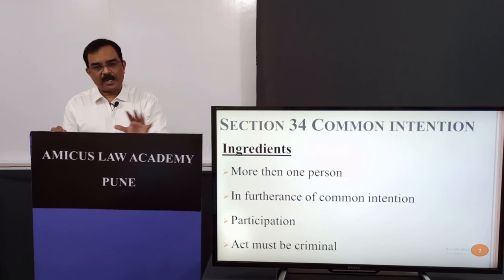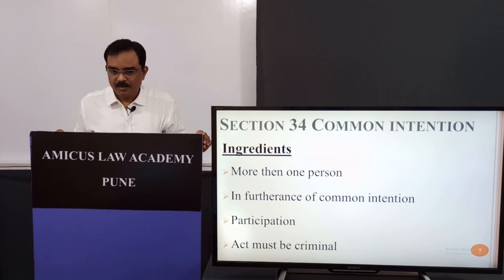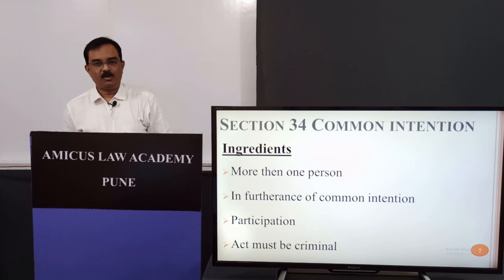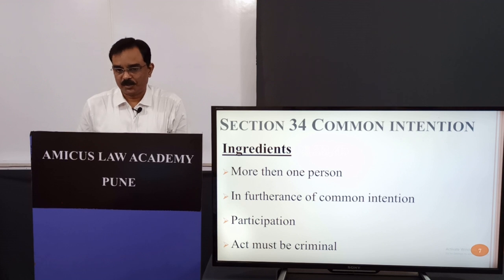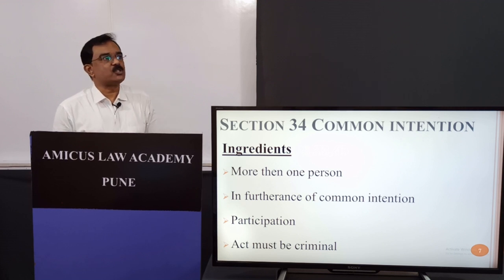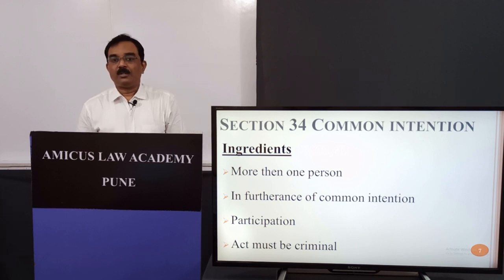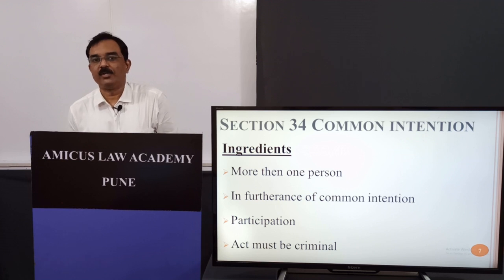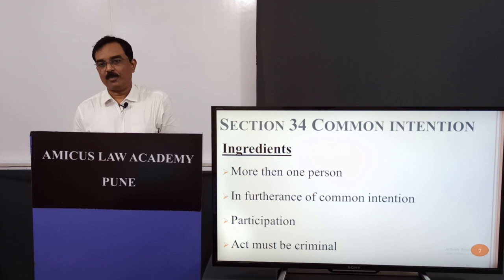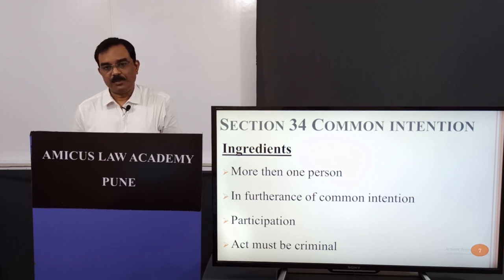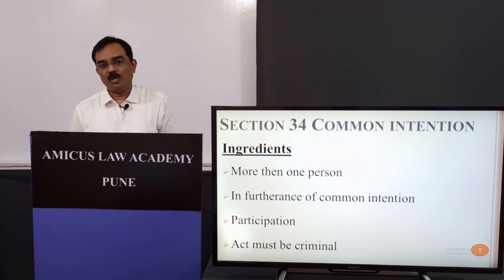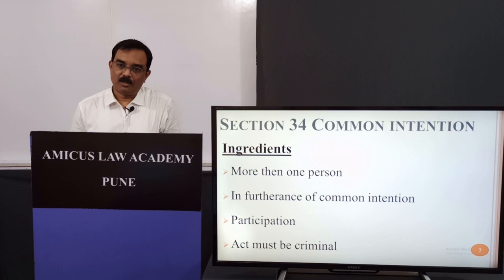The ingredients of Section 34 are: first, the act shall be done by more than one person; second, the act shall be in furtherance of common intention; third, there should be some sort of participation of each and every person in carrying out the design of common intention; and fourth, the act done must be criminal. These are the four requirements to prove that all persons are jointly liable for a criminal act.